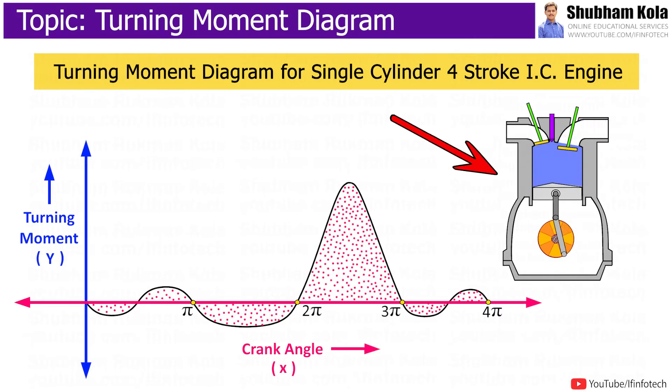Turning Moment Diagram for a single cylinder 4-stroke IC engine is shown in figure. In 4-stroke cycle internal combustion engine, there is one working stroke after crank has turned through two revolutions, i.e. 720 degree or 4 pi radians.